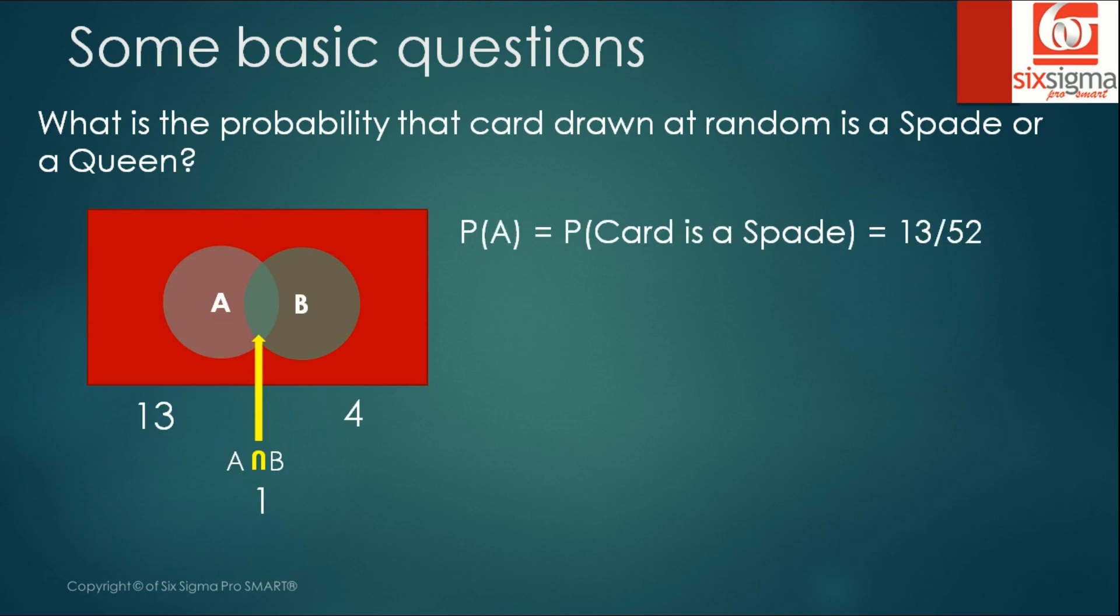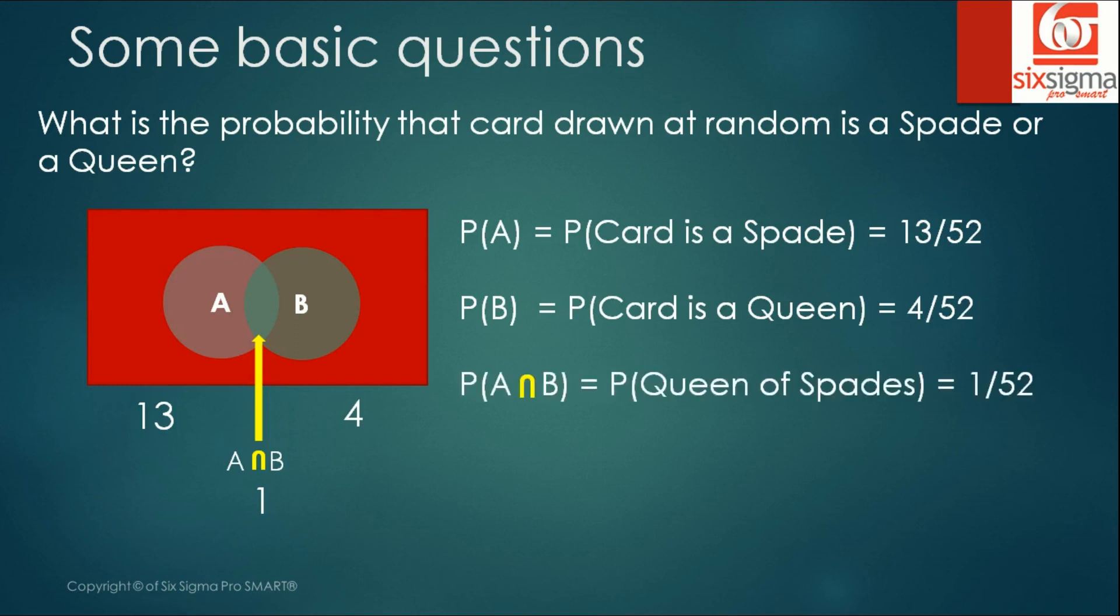So how do we go about solving it? Well, probability of A which says that the card is spade, we already know it's 13 by 52. Probability of event B, that is the card is a queen, is 4 by 52. Now the probability of A intersection B, which is that one card which is a queen of spades, is 1 by 52. So now if you were to calculate the probability of A union B, we'll have to apply the proper formula where we'll have to input the values like the way we have put above. And we get the probability as 16 by 52.